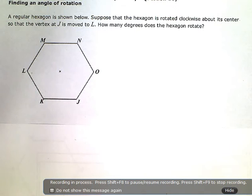Finding an angle of rotation. A regular hexagon is shown below. Suppose that the hexagon is rotated clockwise about its center so that the vertex at J is moved to L. How many degrees does the hexagon rotate?